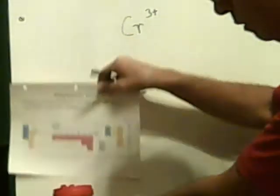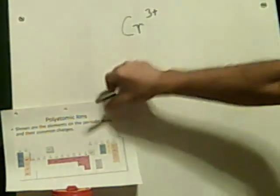Next one: chromium 3 plus. I believe this is called chromium. The correct name is chromium(III) — that's because chromium is one of the transition metals, listed as plus 3. The answer sheet calls this a chromium(III) ion, with the 3 written as a Roman numeral in parentheses.